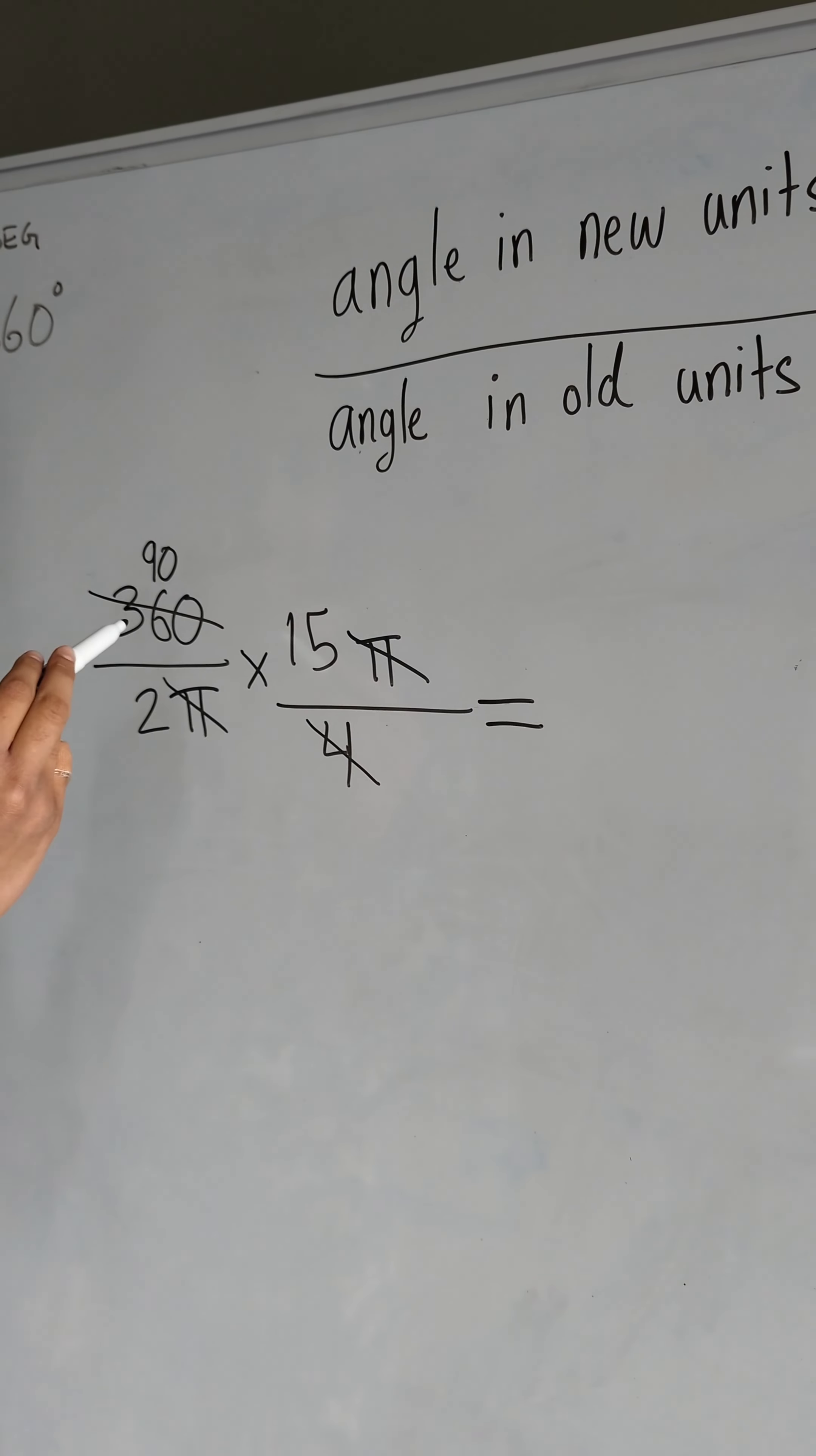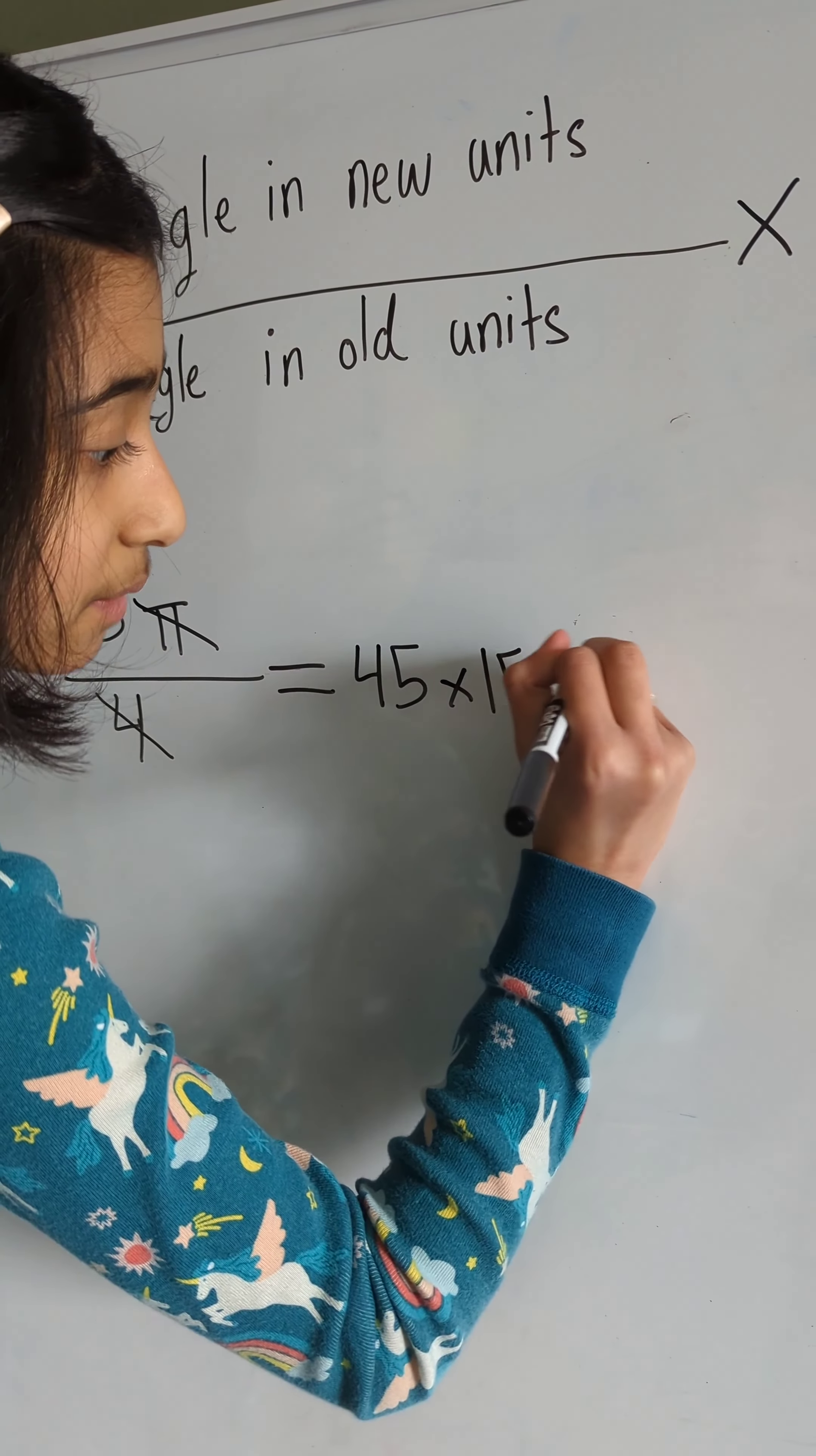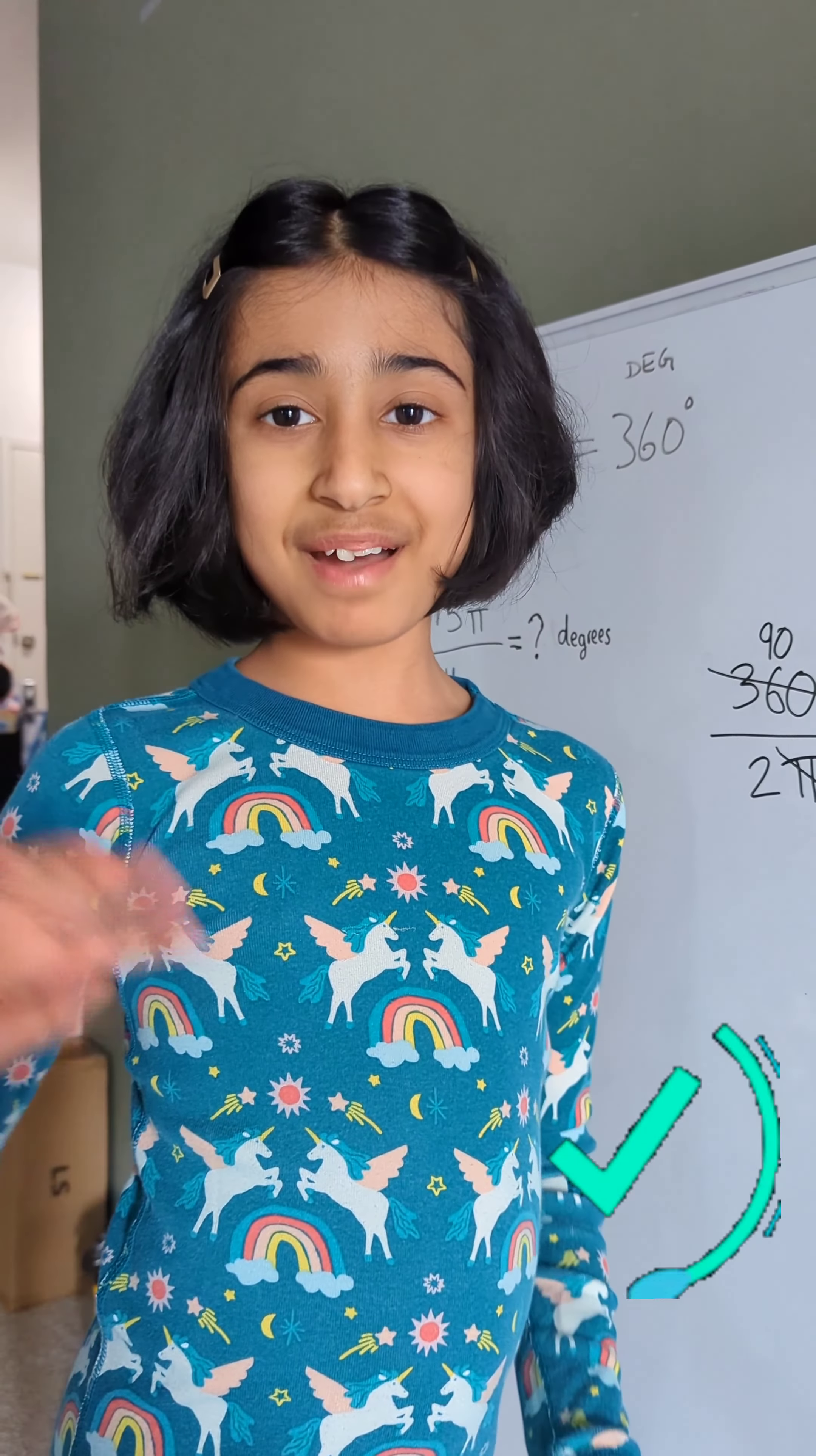We can easily just solve it from here. 90 divided by 2 is 45. So, all we need to do is 45 times 15, and 45 times 15 would equal 675. So, our answer is 675 degrees. That's how you convert a radian into degrees. Bye!